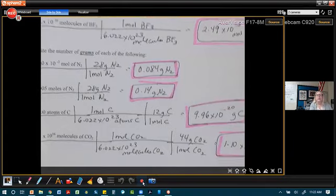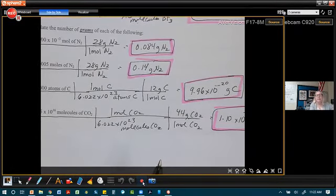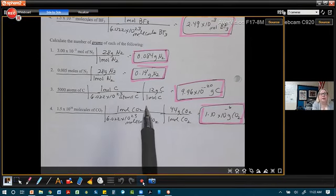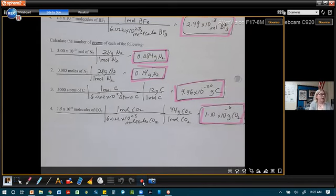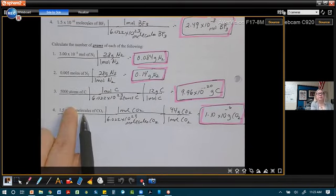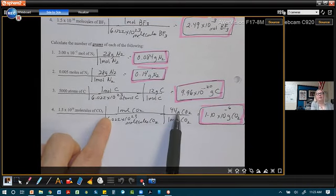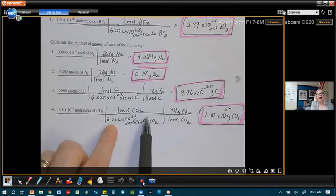Avogadro's number of atoms is a mole of those atoms and that's carbon. And then a mole of carbon, based on the mass on the periodic table, is 12 grams. So two conversions, leading you to 9.96 times 10 to the negative 20th. Last one we're going to go over, because we wanted to get the basics down. We did some clicker questions in class. But when I meet with you next virtual, we'll practice these together.